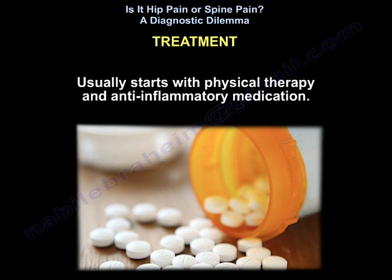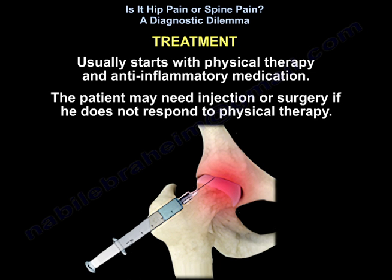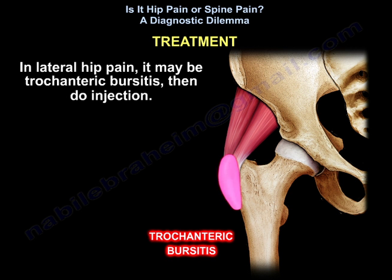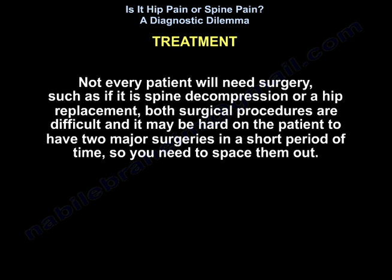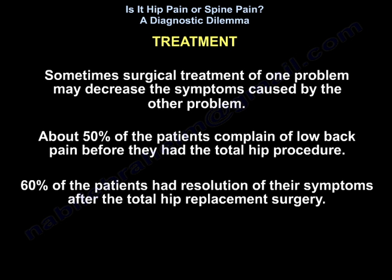Treatment usually starts with physiotherapy and anti-inflammatory medication; the patient may need injection or surgery if they don't respond to physiotherapy. Lateral hip pain may be trochanteric bursitis — treat with injection. Not every patient will need surgery. Both spine decompression and hip replacement are major procedures and it may be hard for a patient to have two major surgeries in a short period, so they should be spaced out. Treating one problem may decrease the symptoms from the other — about 60 percent of patients had resolution of low back pain after total hip replacement.